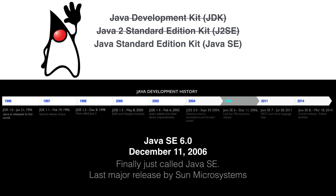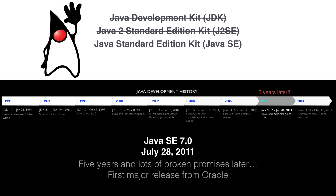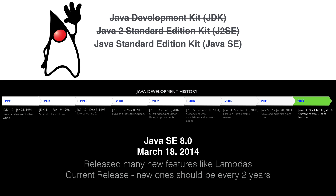When Java 6 came out, somebody finally noticed there's still a 2 in the name. So they dropped the 2 and it became Java Standard Edition. It was the last major release by Sun Microsystems since they sold Java to Oracle. That was a pretty dark time for Java — people weren't sure what was going to happen to the language. Five years and many broken promises later, Oracle finally released a new version of Java. They added lots of cool features like new file IO code, but they also dropped a lot of things like lambdas. And that brings us to the current version.